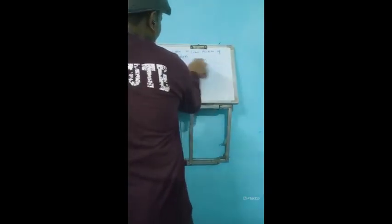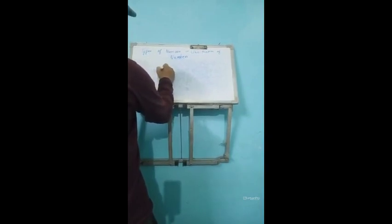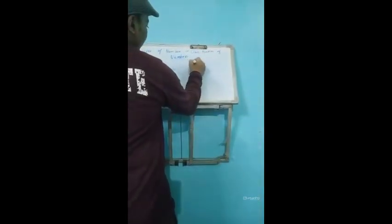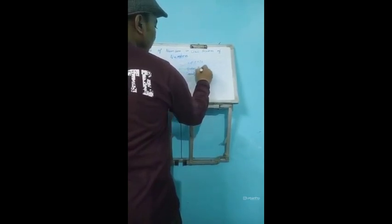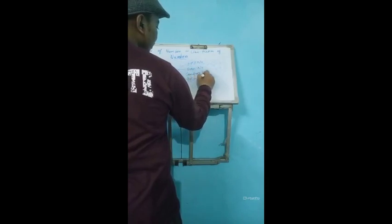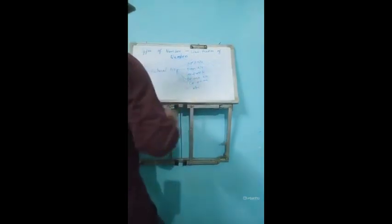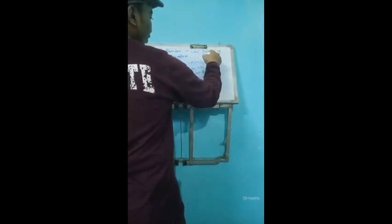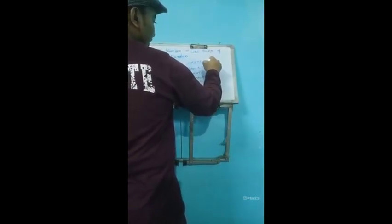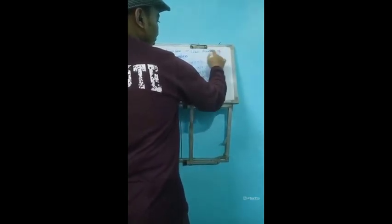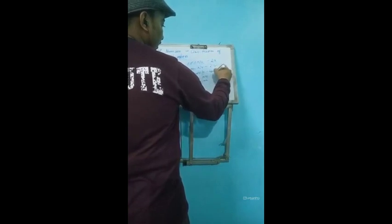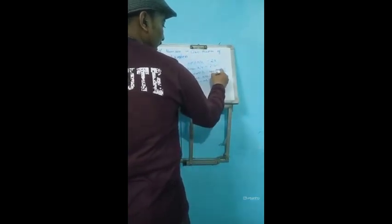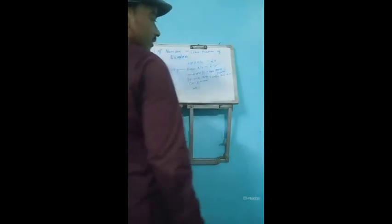Now natural number is further divided into odd number, even number, composite number, and prime number. Odd number is any number which cannot be divided by two. Even number can be divided by two. Composite number has more than two factors. Prime number only has two factors, the number itself and one.